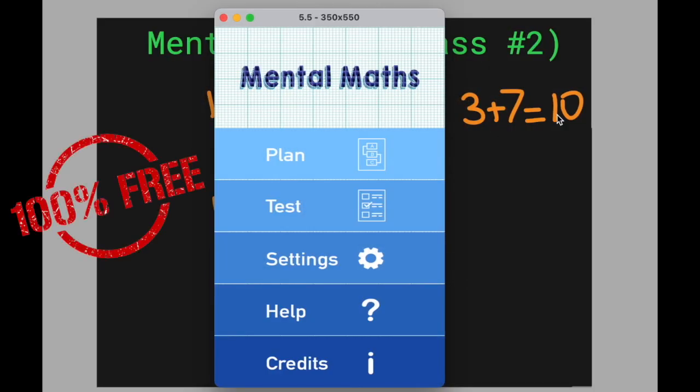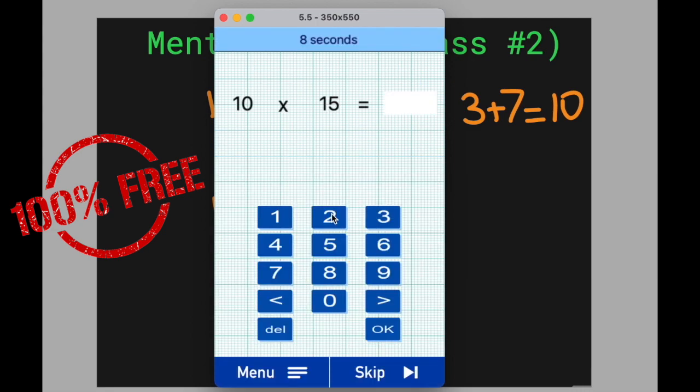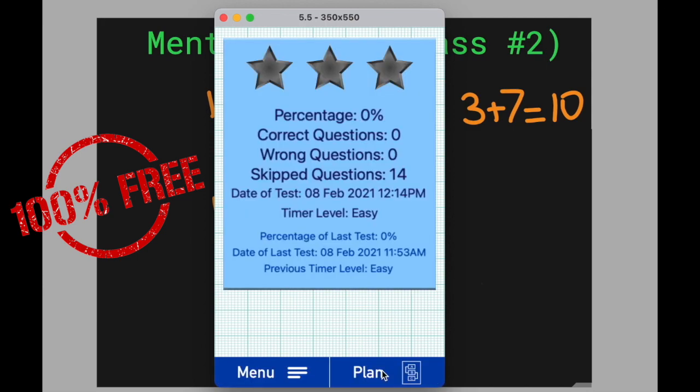You can use my mental maths app to practice this. If you're using it for the first time, there will be no plan button. I have opened it before too, so the plan button is visible. In the beginning, there will be just a test button. Just press it and just skip the questions. What my app basically does is that it takes a test in the beginning and it finds out where you're weak or you need to improve. And it develops a personalized plan depending on how you answer the questions. So I've told you to skip all the questions.